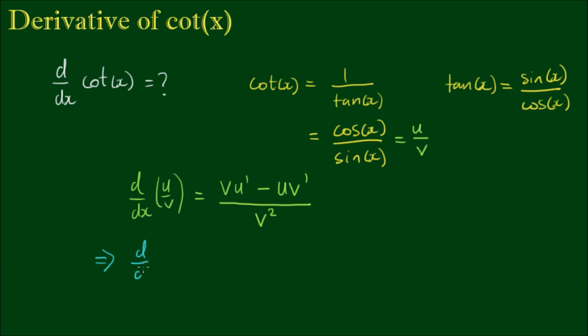And thus the derivative of the cotangent of x is equal to the sine of x by the derivative of the cosine of x, which is negative sine of x, minus cosine of x by the derivative of sine of x, which is cosine of x, all over sine of x squared.